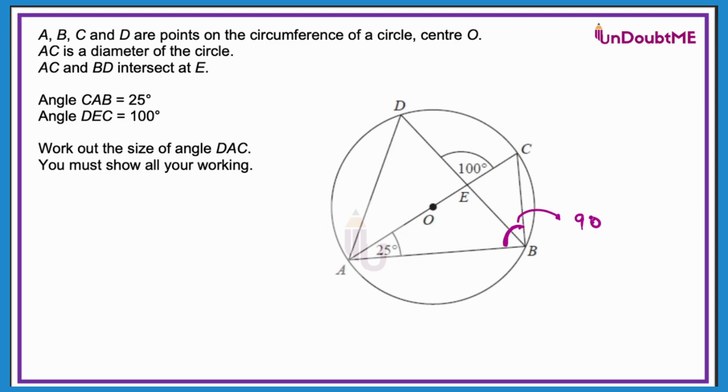Now over here you can see that this 90 degrees can be split up into two of these angles. Overall angle ABC is 90 degrees. The reason is angle in the semicircle is 90 degrees.